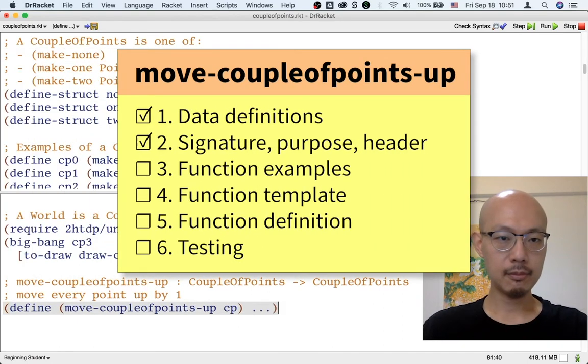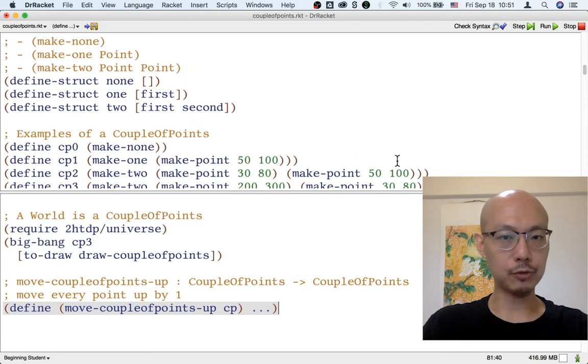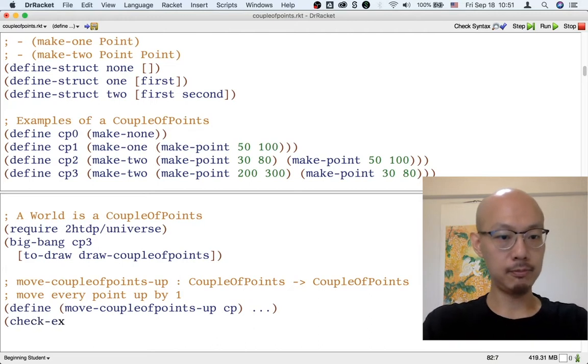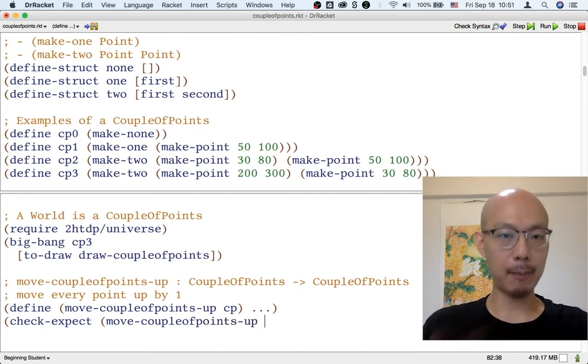Okay, let's write some examples. And for writing examples for this new function, the data examples that we wrote before are going to be quite helpful. We need to write at least three examples again because we need to write an example at least for every kind of input, and we have three kinds of inputs.